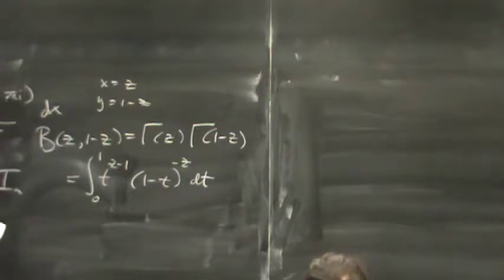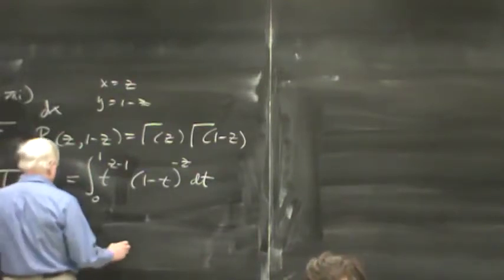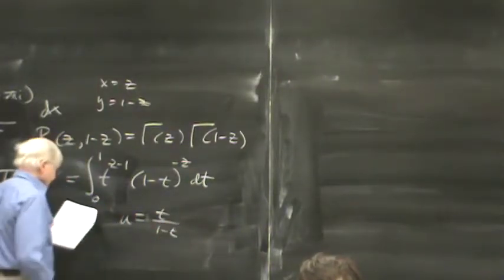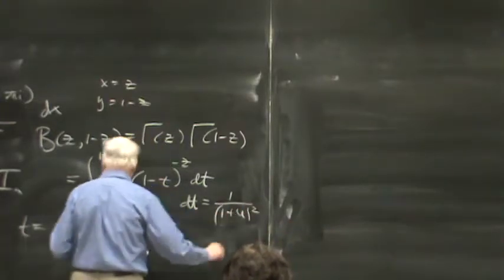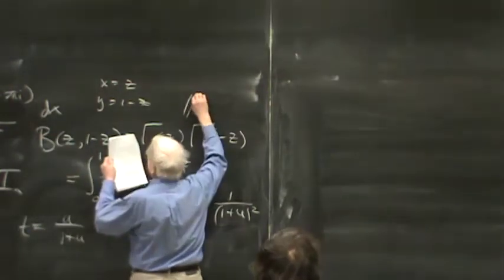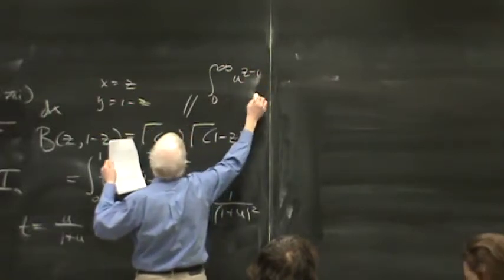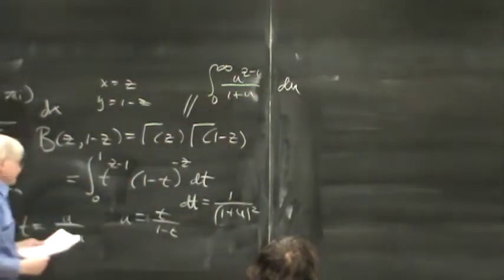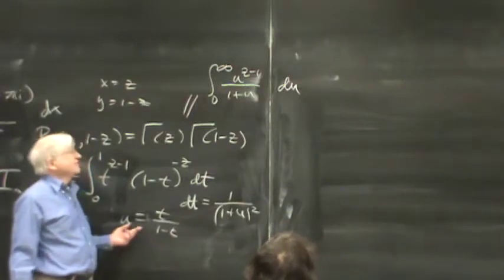We make the change of variables t = u/(1+u), so that u = t/(1-t) and dt = 1/(1+u)². The beta function becomes ∫₀^∞ u^{z-1}/(1+u) du. We originally had an integral from zero to one, but because of this change of variables, u goes from zero to infinity.